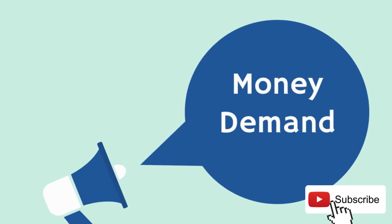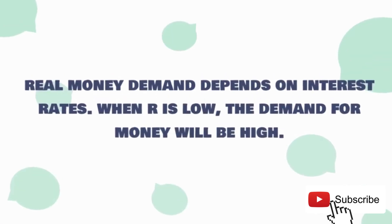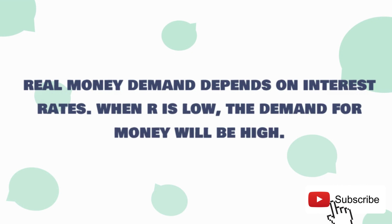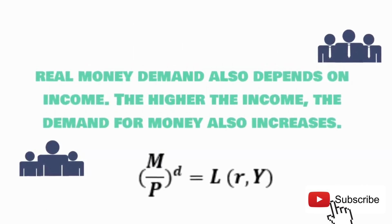Next, we discuss money demand (MD). Real money demand depends on interest rates: when R is low, the demand for money will be high. R is the opportunity cost of holding money — when R is high, people prefer saving, so money demand is low. Real money demand also depends on income (Y): the higher the income, the higher the demand for money. The money demand function is M/D = L(R, Y).